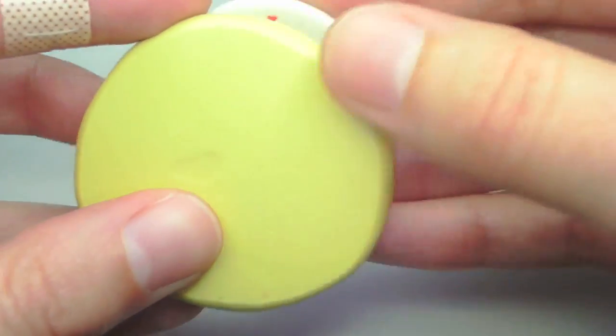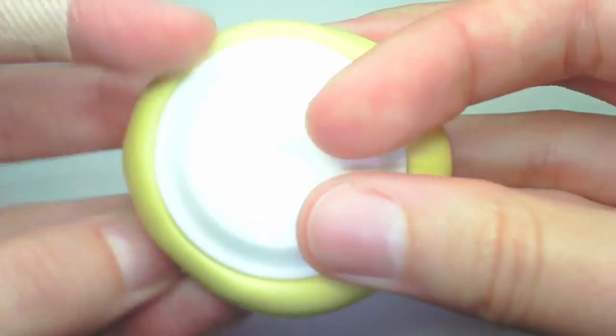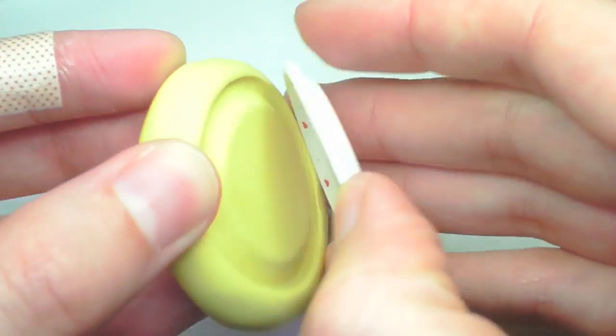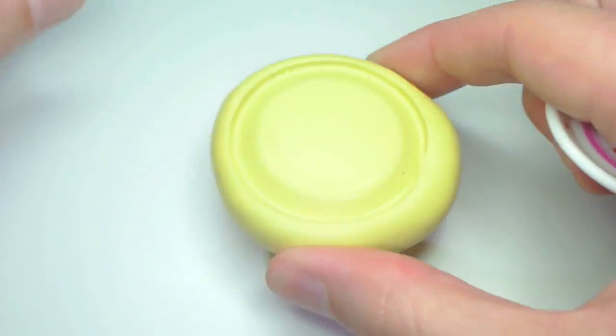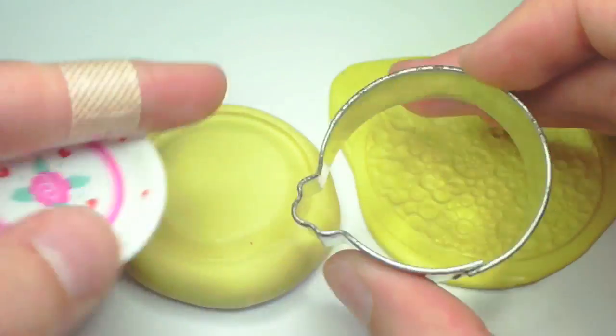Then to make the plate mold, take an old dollhouse plate and press it into some mold maker and you'll get a nice plate mold.